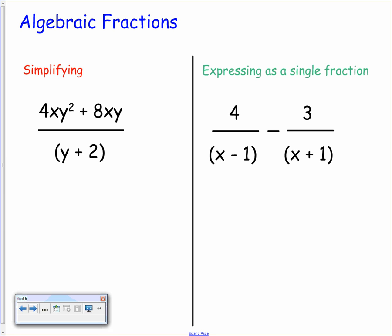The first one we have here is 4xy squared plus 8xy over y plus 2. Now remember to factorize. We need to be looking for common factors, then difference of two squares and then trinomials. So these are the things that we should be looking to identify so that we can divide both the numerator and the denominator by a factor.